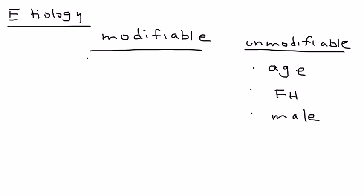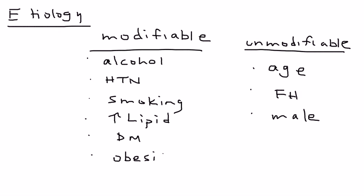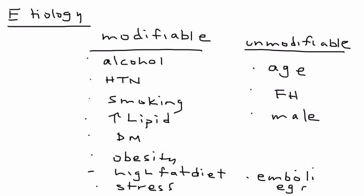The modifiable list is a longer one. It includes alcohol, high blood pressure, smoking, increased cholesterol or hyperlipidemia, diabetes mellitus, obesity, a high fat diet, stress, and emboli, any kind of disorder that would lead to emboli such as atrial fibrillation as an example.